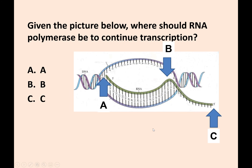Given the picture below, where should RNA polymerase be to continue transcription? Look at the orientation of the RNA molecule — you notice it goes 5' to 3'. So RNA polymerase is going to be positioned so that it can continue transcribing that RNA. The answer is position eight.